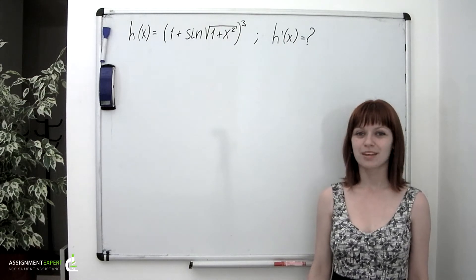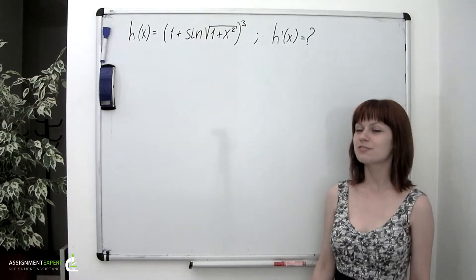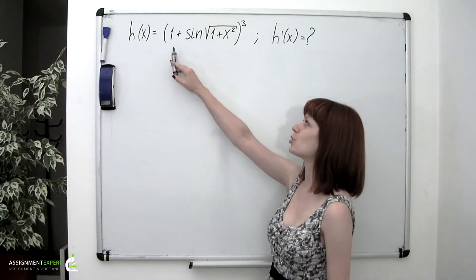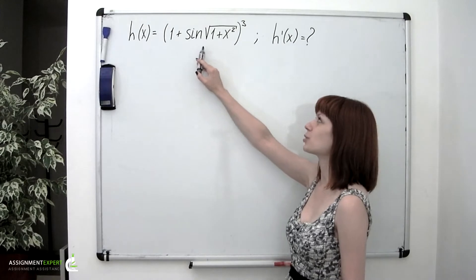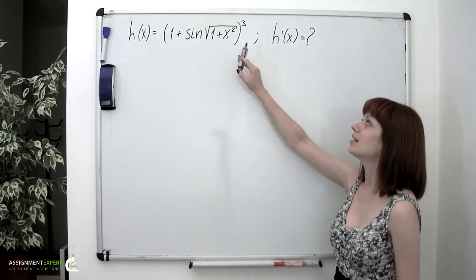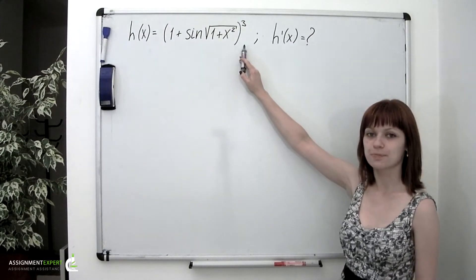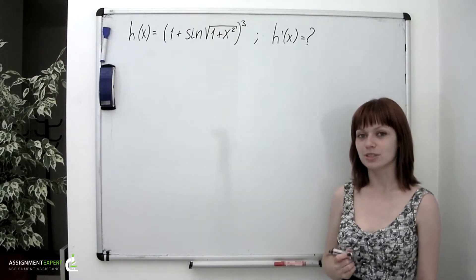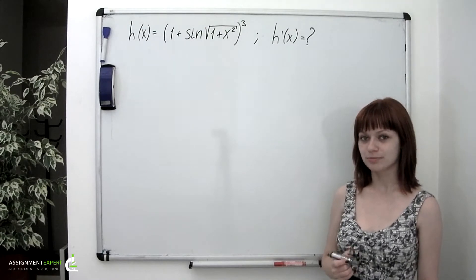Example 3. We have a composite function h of x, which is equal to 1 plus sine of square root of 1 plus x squared, all to the third power. Let's find this derivative using the chain rule.